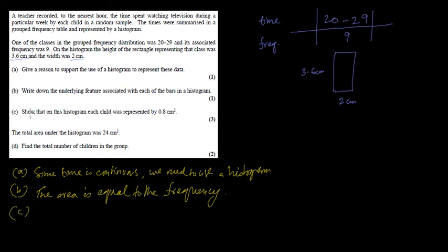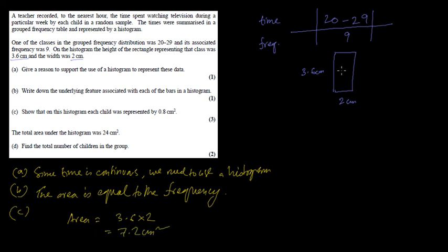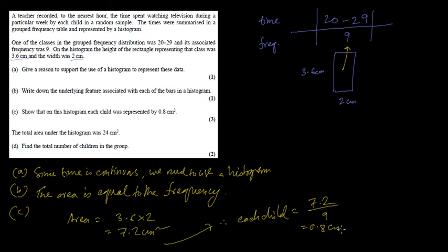Question C: we have to show on the histogram what each child represents. For this bar, the area equals length times breadth equals 3.6 cm times 2 cm equals 7.2 cm². This area represents 9 children. Therefore, each child represents an area of 7.2 divided by 9, which equals 0.8 cm².